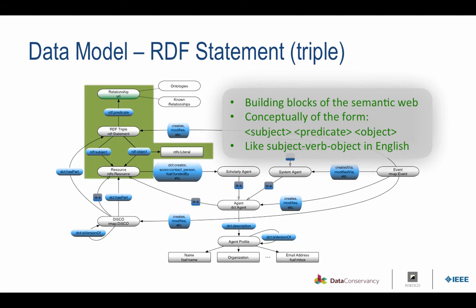The next concept is the RDF triple, which is a building block of the semantic web. It is conceptually of the form subject, predicate, and object — very similar to subject, verb, object in English. It's the way resources are described in the semantic web.